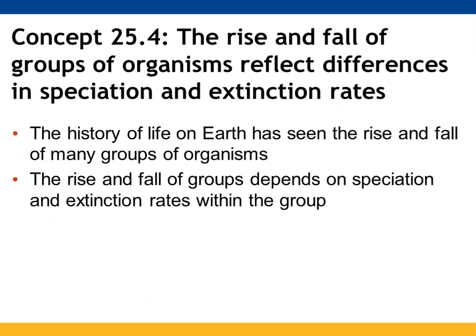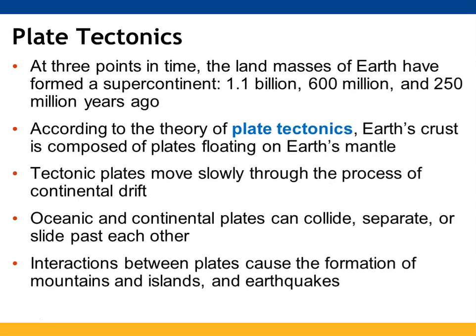The rise and fall of groups is seen through speciation differences as well as extinction rates. The land masses of Earth at three different points in time — 1.1 billion, 600 million, and 250 million years ago — formed what we know as a supercontinent. The idea behind plate tectonics is that Earth's crust is composed of plates floating on top of the Earth's mantle. These plates move slowly as part of continental drift. Both oceanic and continental plates can collide, separate, or slide past one another.